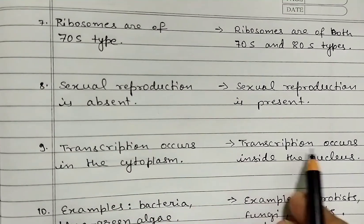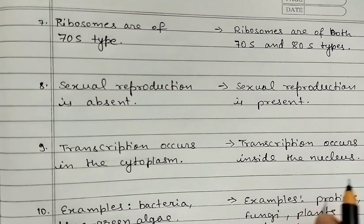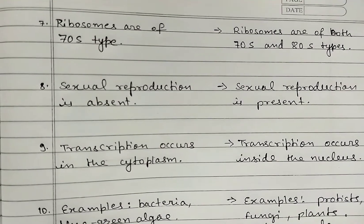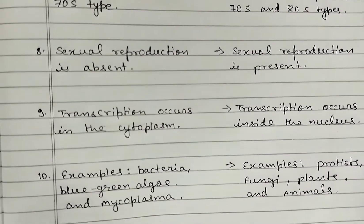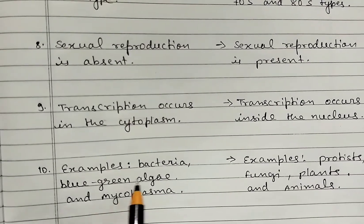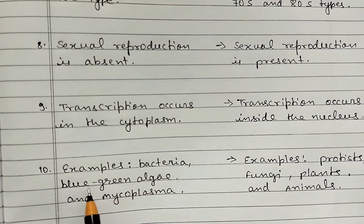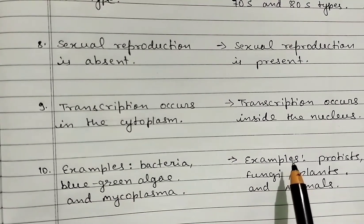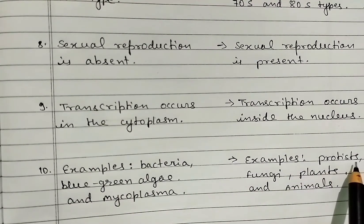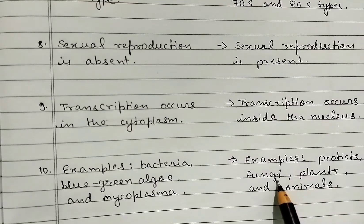Transcription occurs inside the nucleus in eukaryotes. Examples of prokaryotic cells are bacteria, blue-green algae, and mycoplasma. Examples of eukaryotic cells are protists, fungi, plants, and animals.